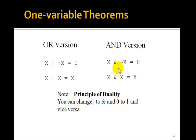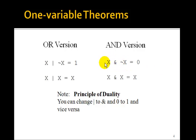The principle of duality says we can change ORs to ANDs and 0s to 1s. So x AND NOT x must be 0 — one of them has to be 0. And x AND x is equal to x: 1 AND 1 is 1, 0 AND 0 is 0.